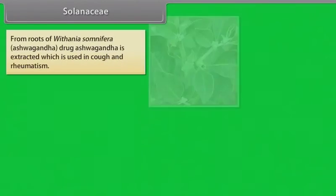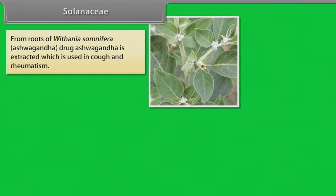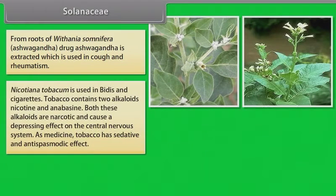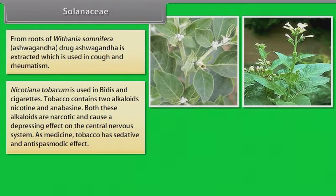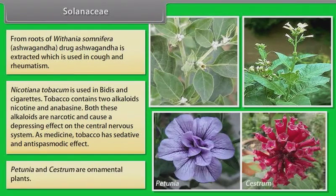From roots of Withania somnifera (ashwagandha), the drug ashwagandha is extracted, used in cough and rheumatism. Nicotiana tabacum is used in bidis and cigarettes; tobacco contains two alkaloids — nicotine and anabasine — both narcotic and causing a depressing effect on the central nervous system. As medicine, tobacco has sedative and antispasmodic effect. Petunia are ornamental plants.